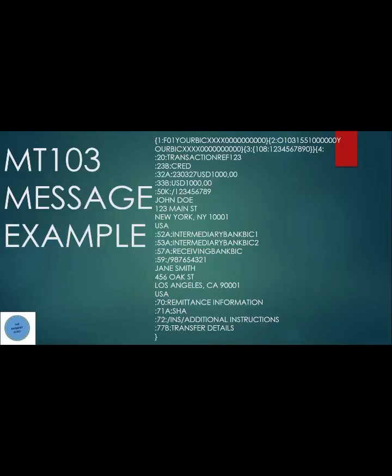Block two can represent either the receiver financial institution bank or the receiver bank BIC, depending on the input and output identifier. In this case, block two shows 'O', meaning it is output from SWIFT — so the message is an incoming message. The bank that sent out the payment is bank one BIC, which is YOUR-BIC, and the receiver BIC is the message sender bank available in block two.